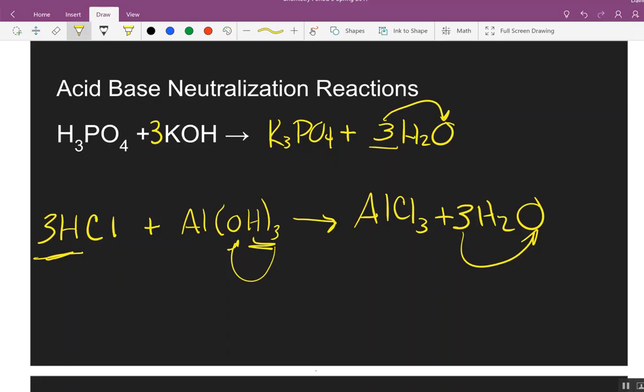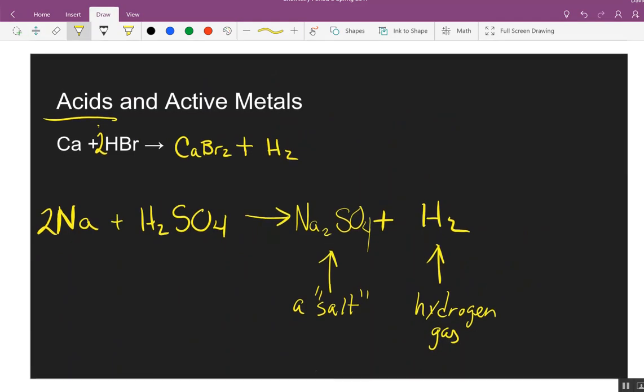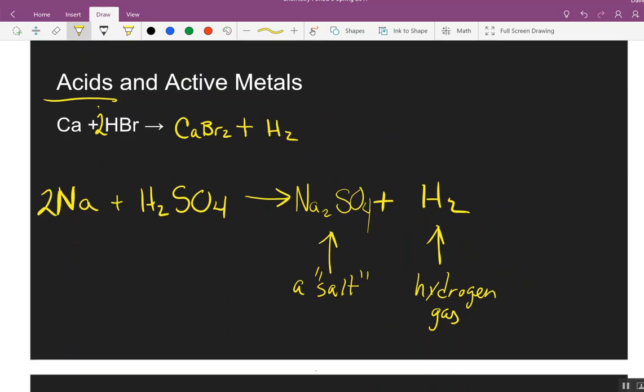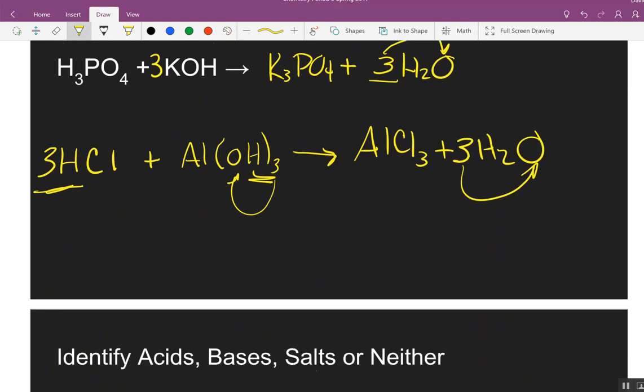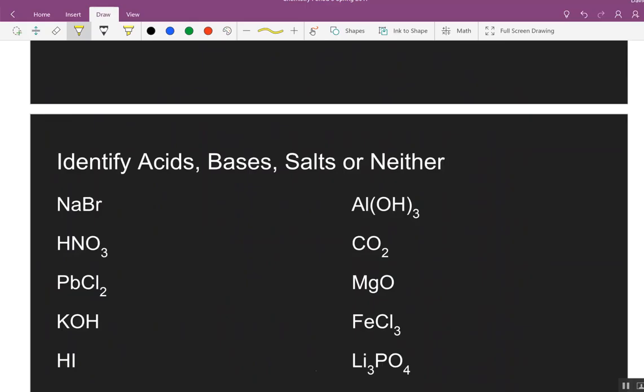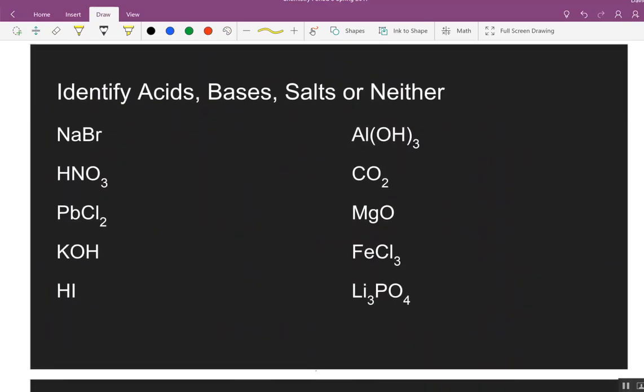Okay. That is... So, first two problems. There will be one of acids with active metals. Acid-base neutralization. Next one is just going to be to identify them. Acid, start with what? H. Bases end in O-H. Salts always have a metal and something else. And if they don't have a metal, they're neither.